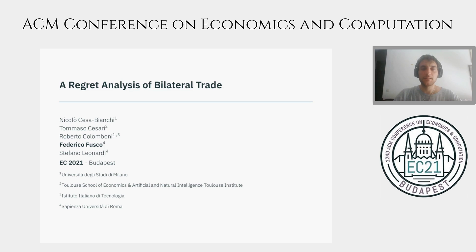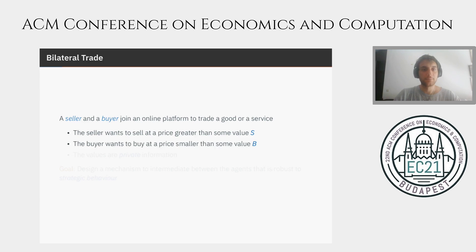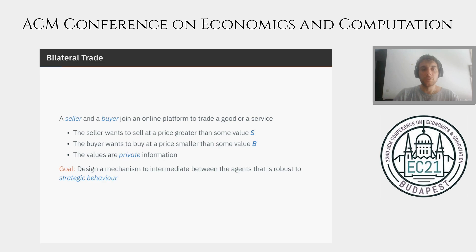In this paper, we study learning in the bilateral trade problem from the perspective of regret minimization. Let's start by introducing the bilateral trade problem. Imagine that a seller and a buyer join an online platform to trade a good. The seller wants to sell a certain item at a price greater than some value S, while the buyer wants to buy the same item at a price smaller than some value B. Those two values are private information of the agents, and the goal of the mechanism designer is to design a platform that intermediates between the two agents and that is robust to their strategic behavior.